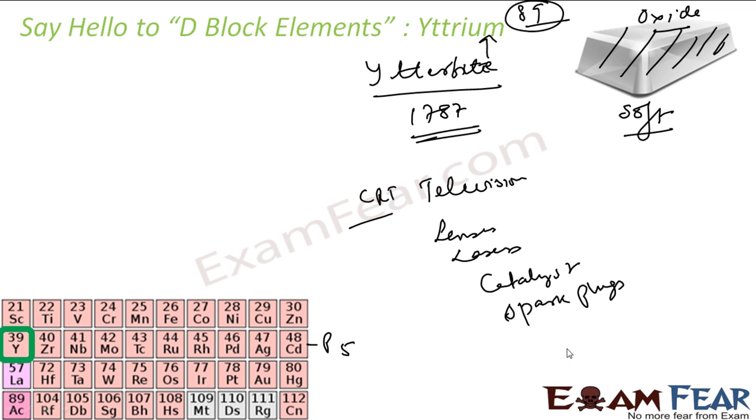It is also used in spark plugs in vehicles. It is also used as gas mantles. You must have seen some gas mantles where earlier we used to use thorium for the mantle. There will be a pipe and a gas cylinder here. And here they have some mantle actually. Earlier thorium was used, but since thorium is radioactive, now instead of thorium, we use Yttrium.